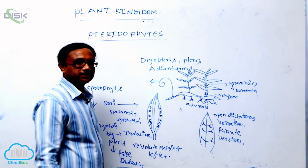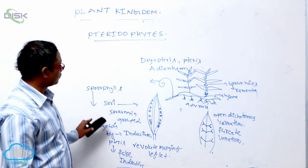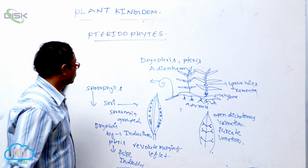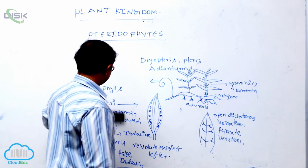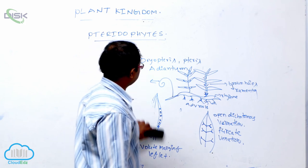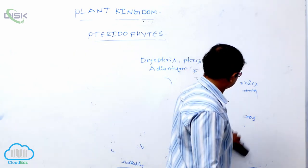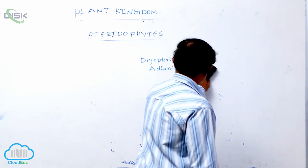They produce similar types of spores that germinate to produce the gametophyte. Examples include Dryopteris, Pteris, and Adiantum, which are known as fern plants.